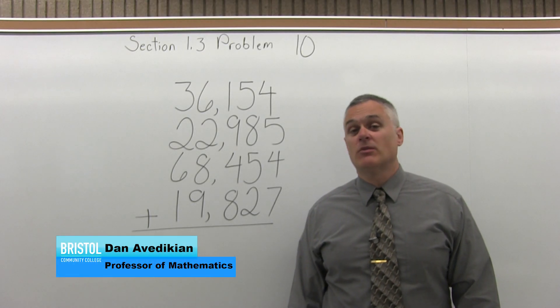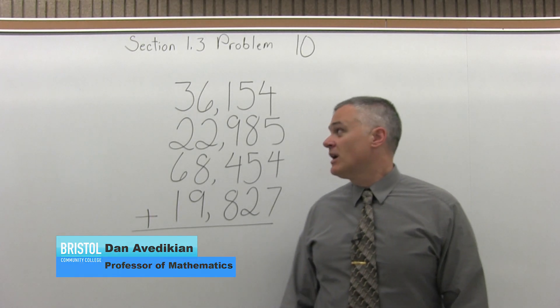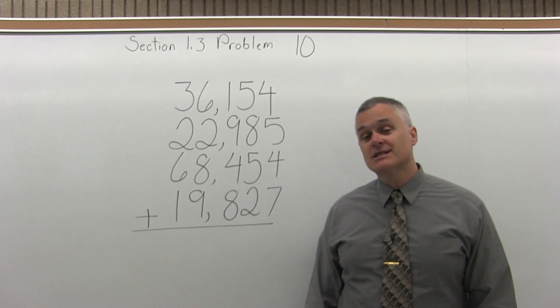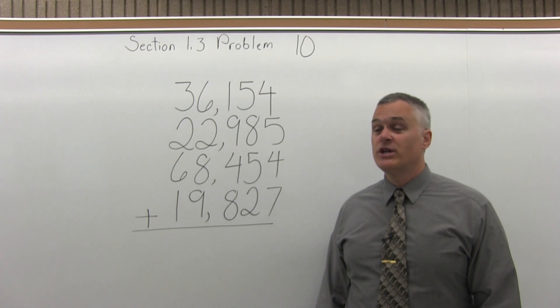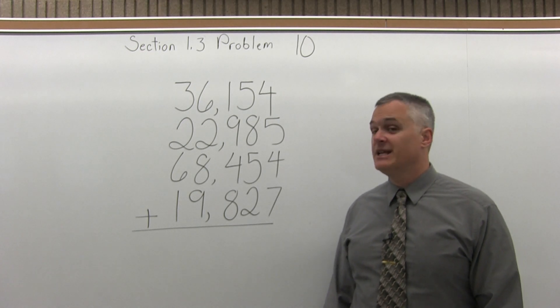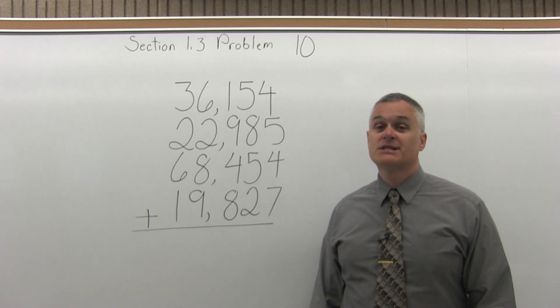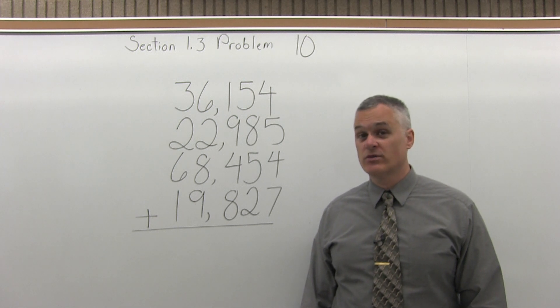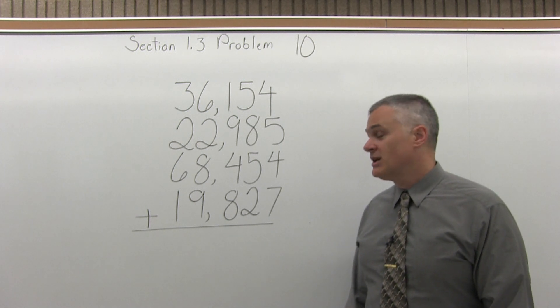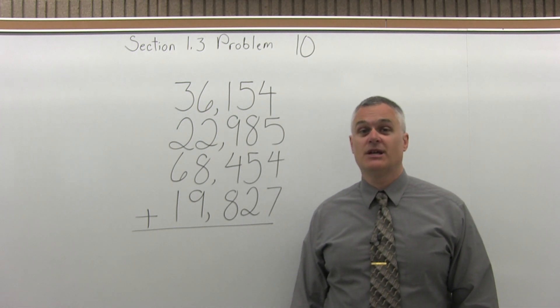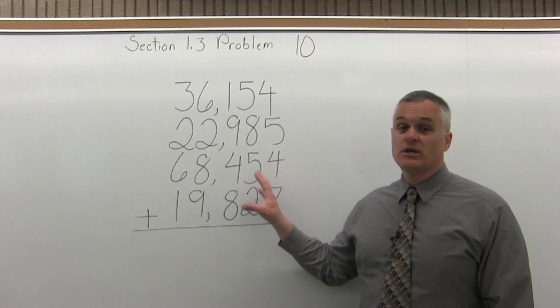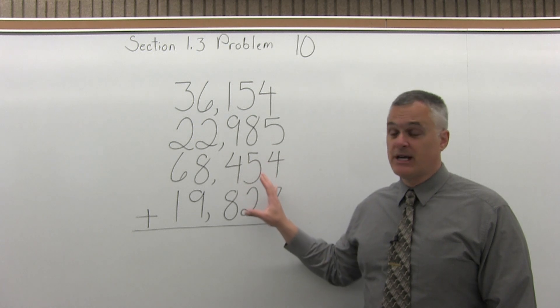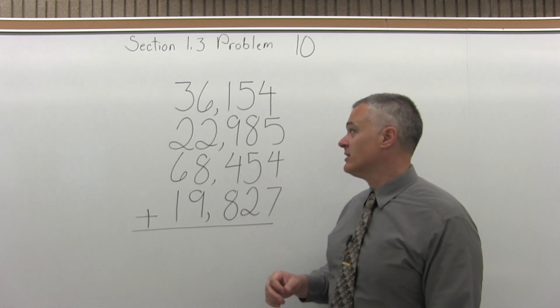This is Section 1.3, Problem 10. We have four fairly large numbers to add together: 36,154 plus 22,985 plus 68,454 plus 19,827. Now the problem is already written in a vertical format, in other words up and down, so it's in a format that's easy for me to add together.